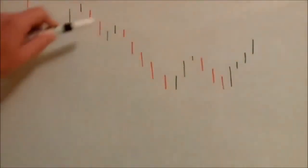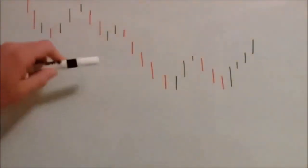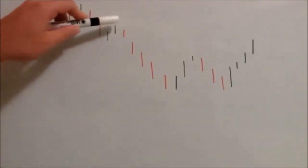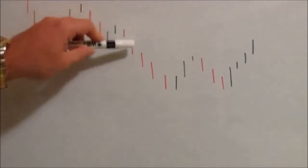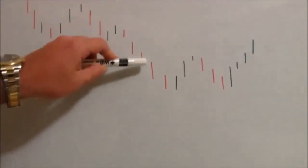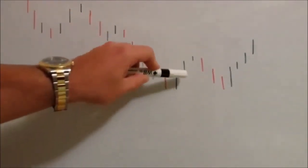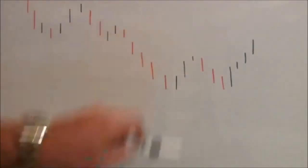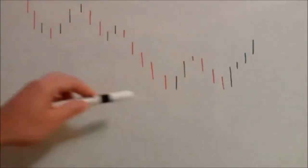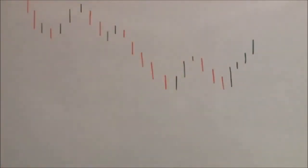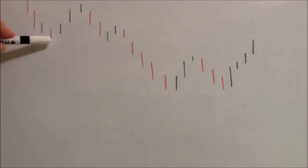This is a representation of a stock market chart. Each of the little red lines represents the share price going down for one day, and each of the green lines represents the share price going up for the day. If this was a real chart, what we'd want to do is work out where we want to buy these shares — what price to pay.